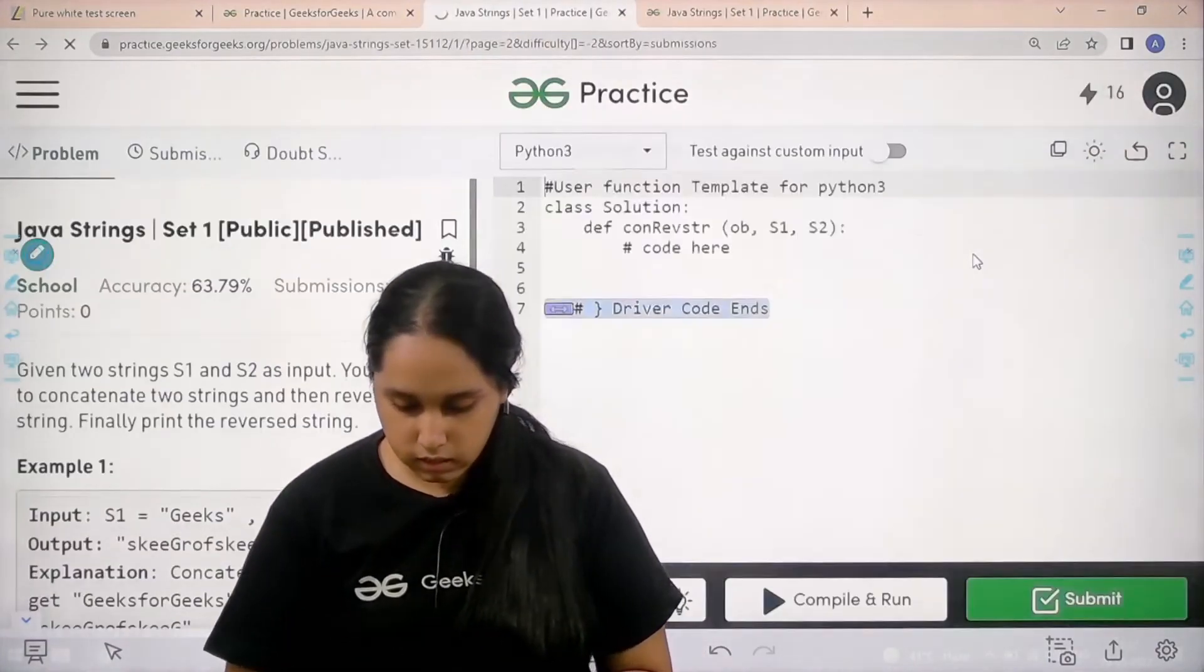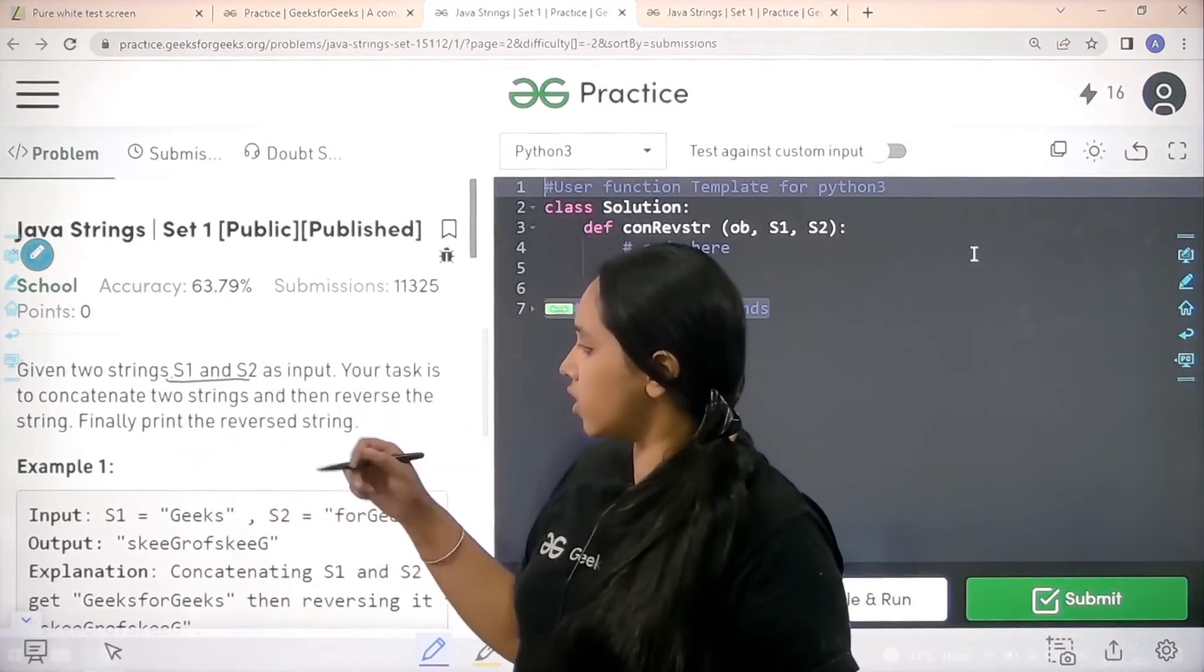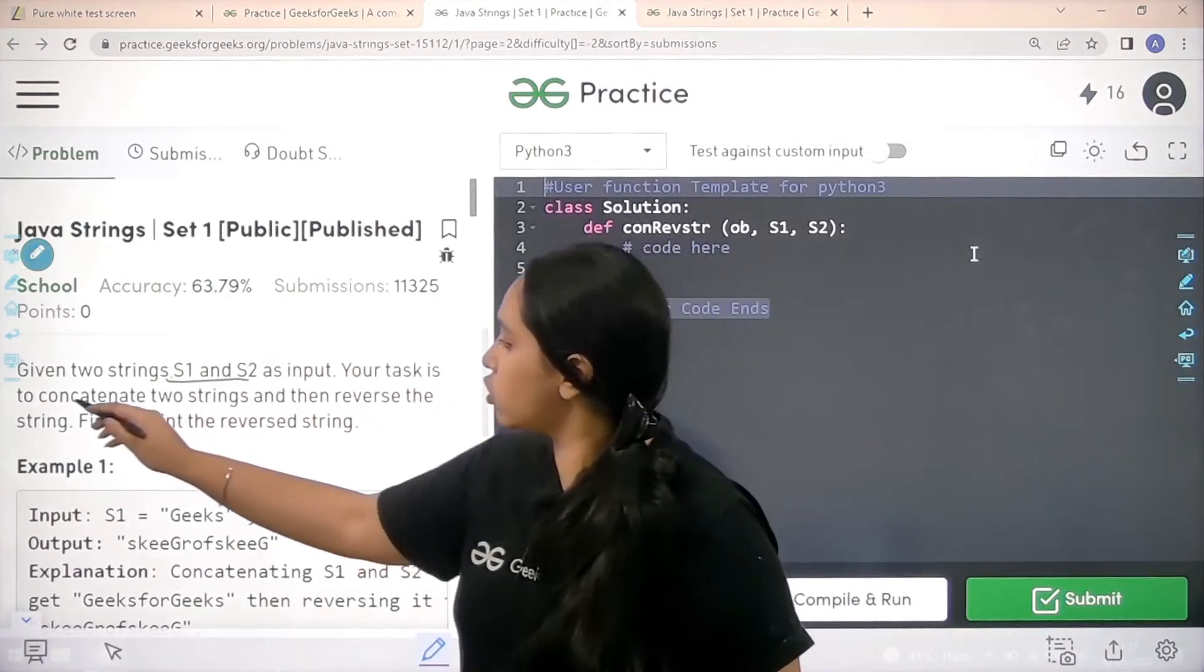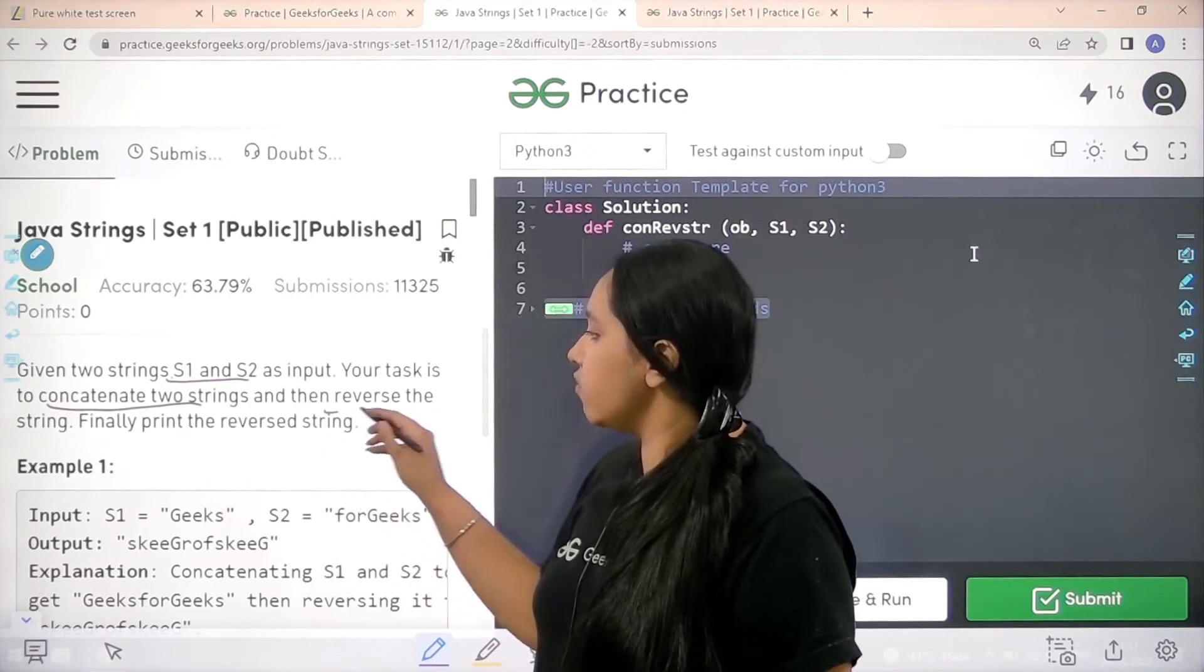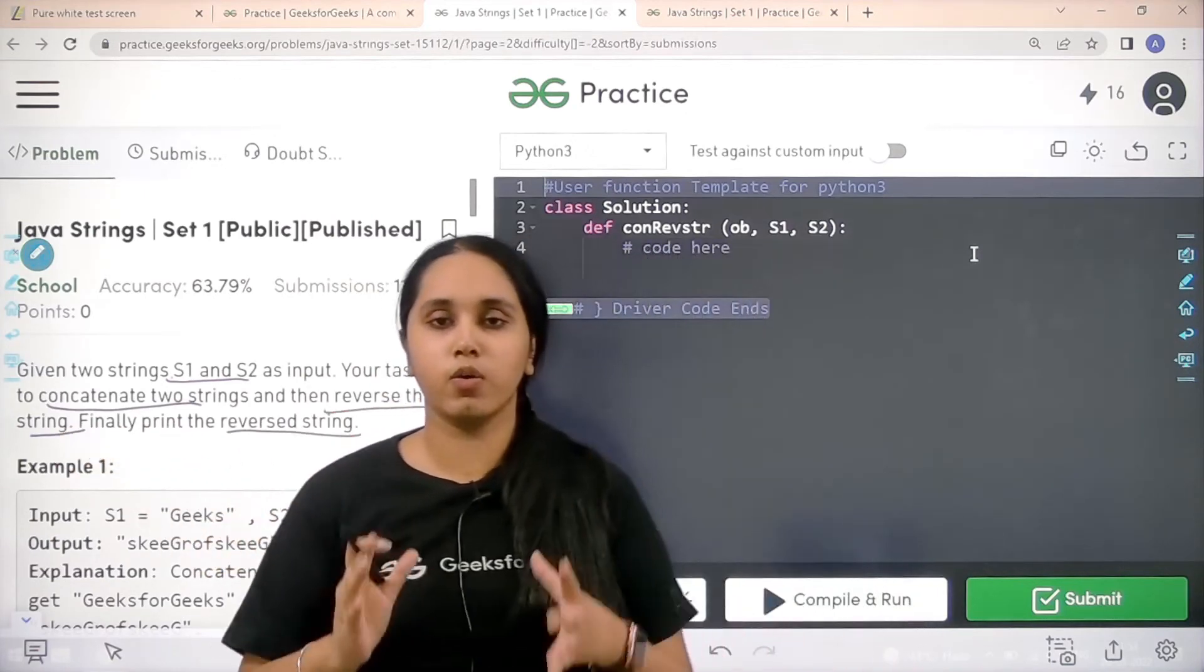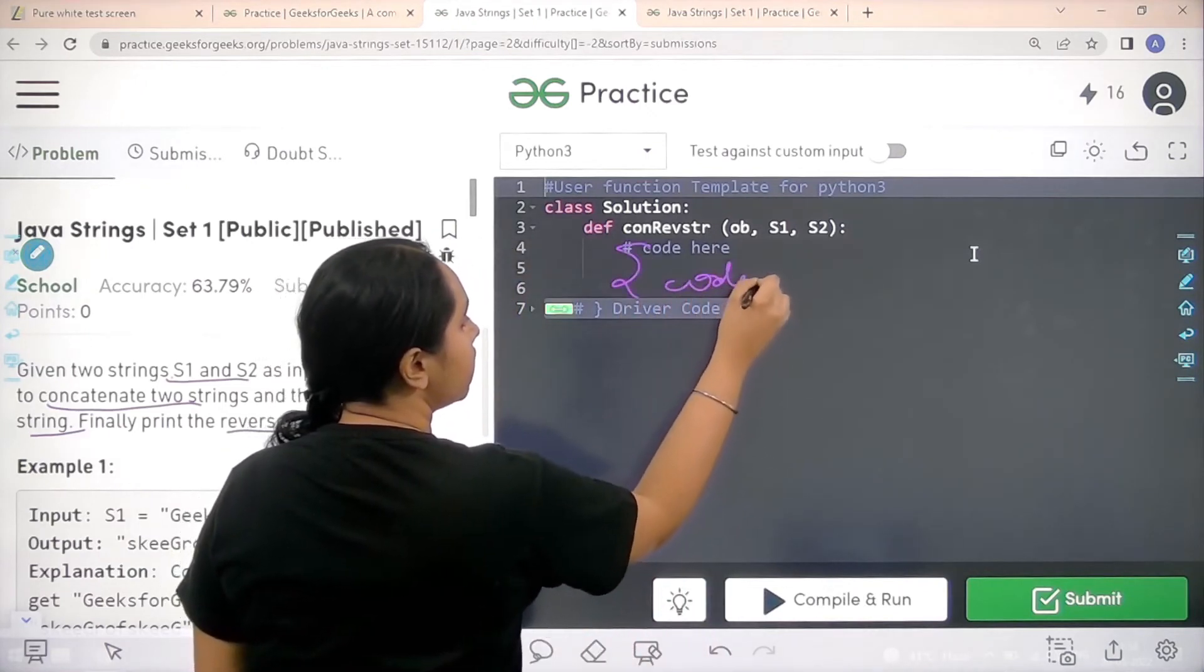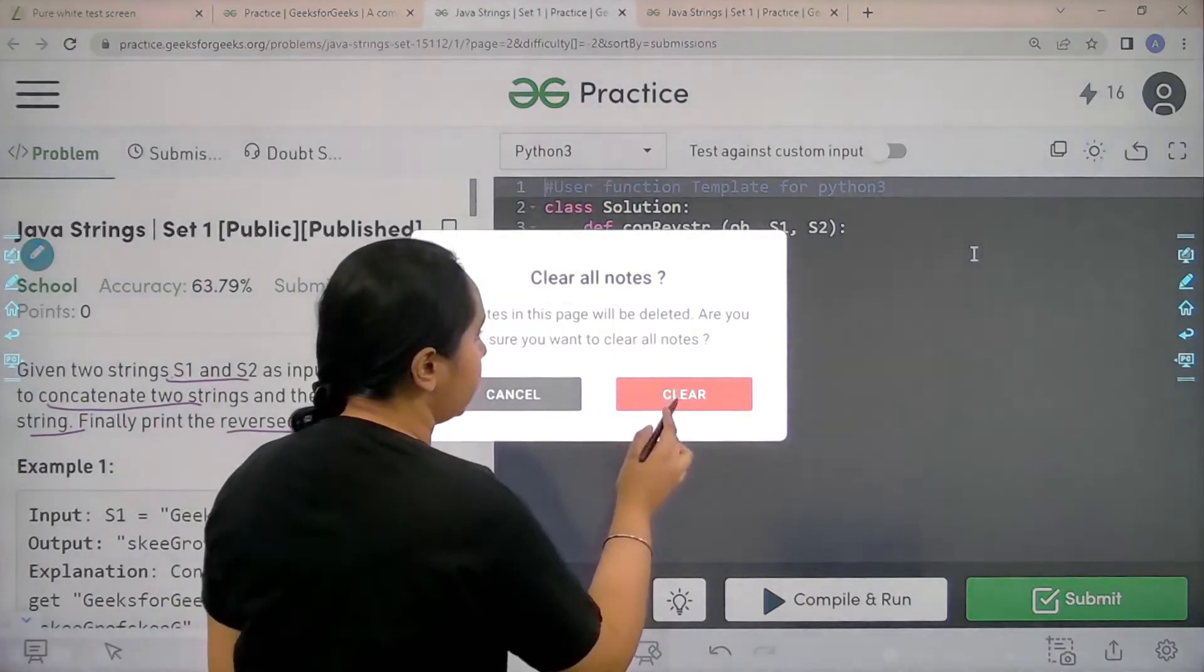So it's opening. Let's wait. So guys, let's read the question. You are given two strings, S1 and S2. Your task is to concatenate them and then reverse them. And we need to print the reverse string. So I hope the question is clear to you. We would code it over here.